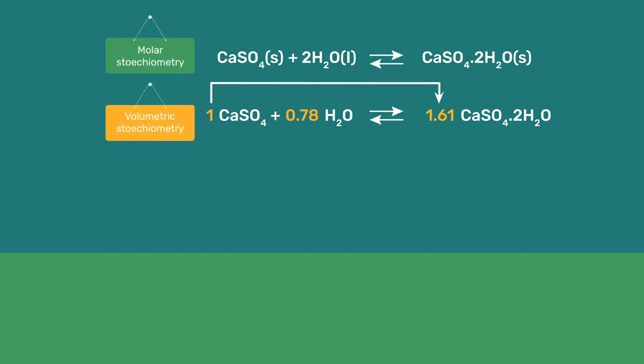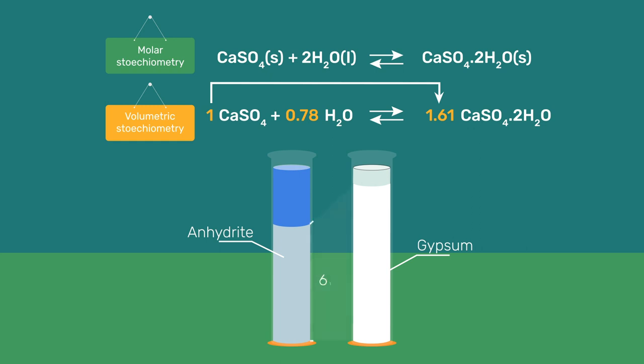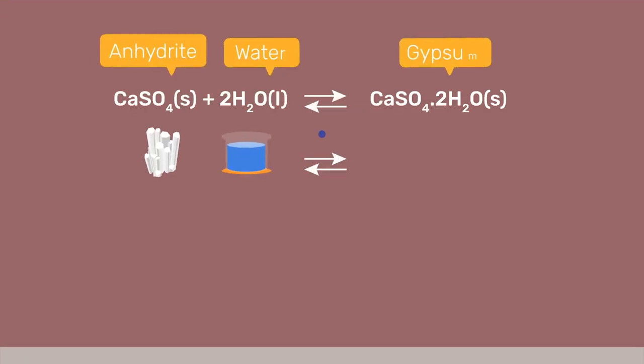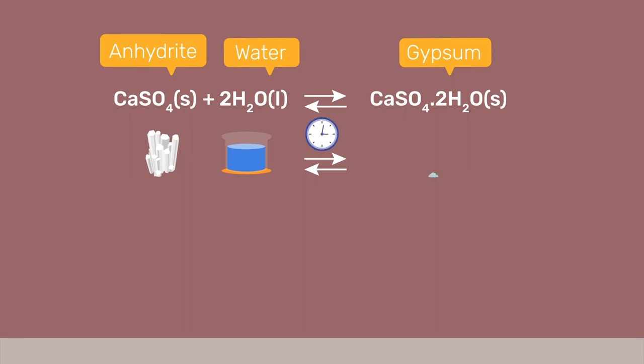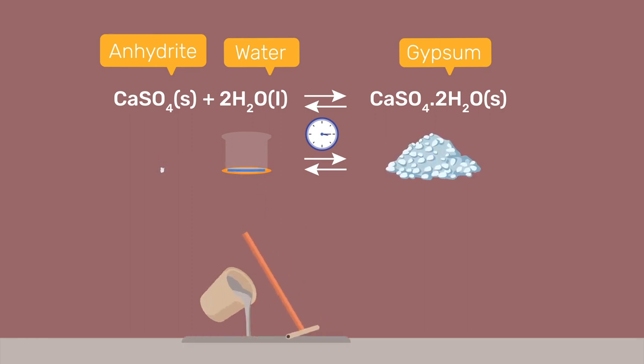Rewriting this reaction with volumetric stoichiometric coefficients, we see that the solid's volume increases by 61%, slightly more than for plaster of Paris, or hemihydrate, making anhydrite from this perspective also an effective mineral binder. Anhydrite is used instead of hemihydrate when longer open times are needed, something that its slower reaction can provide. Examples of its use include self-leveling screeds for flooring.